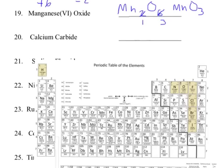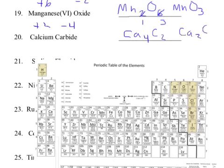Now calcium carbide: calcium is plus 2 and carbide is minus 4. Ca writes down carbon's number, 4, and C writes down calcium's number, 2. That also reduces — a 4 to 2 ratio reduces to a 2 to 1 ratio.